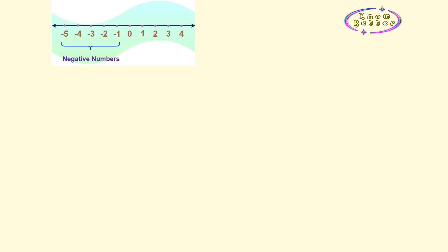And if integers are written in the form of a fraction or something like 2 by minus 5 or minus 6 by 7, these are called rational numbers.